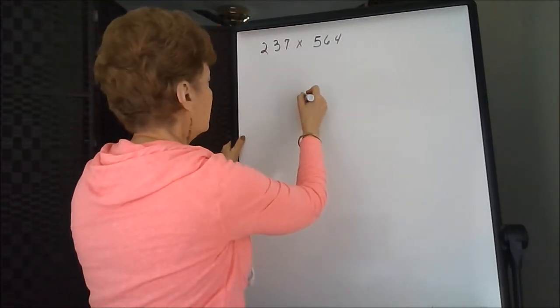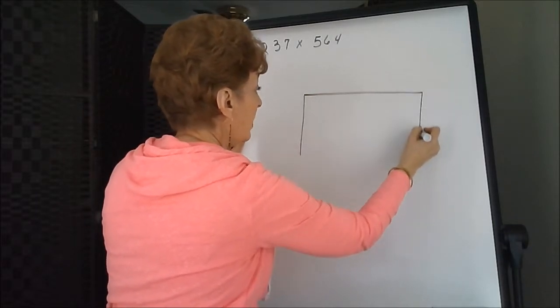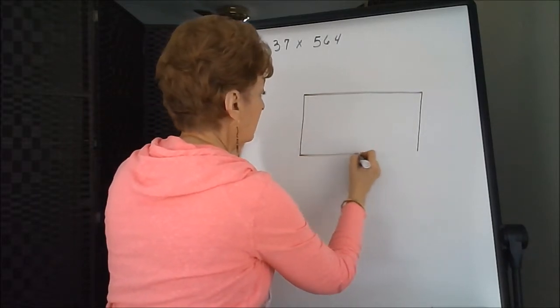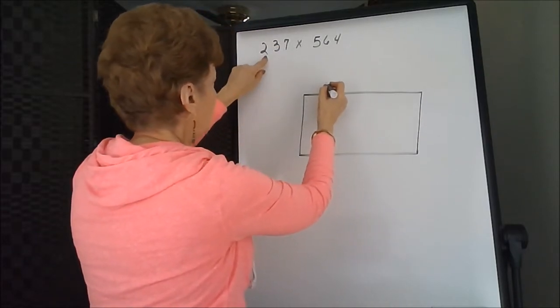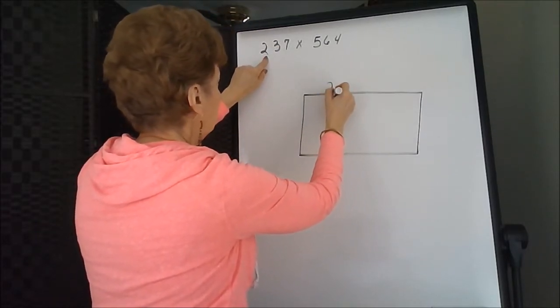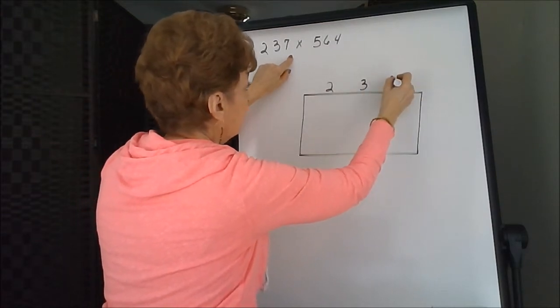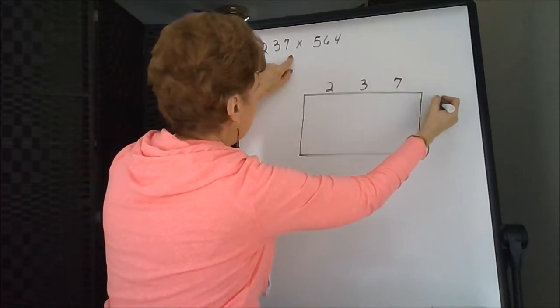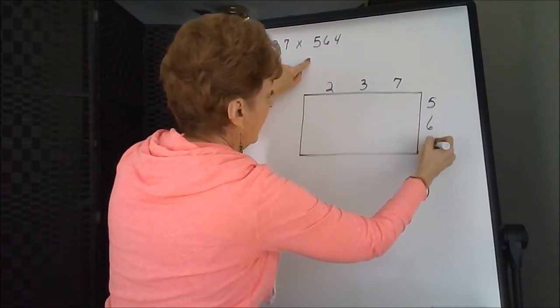So I have to make it a little bit bigger because I'll need a box for the two and the three and the seven, and I'll need a box for the five, the six, and the four.